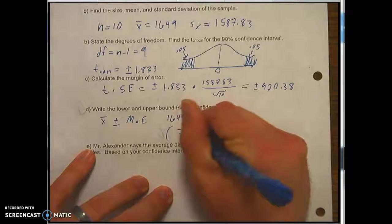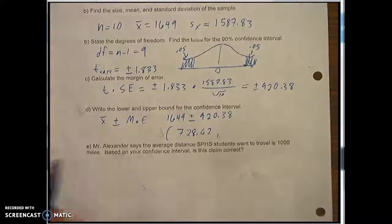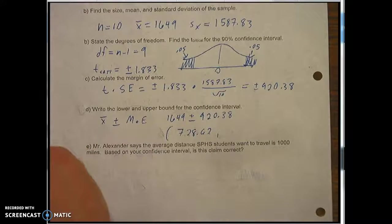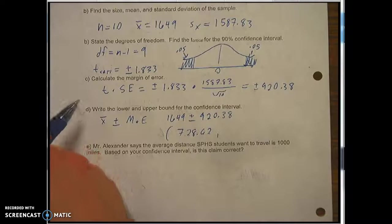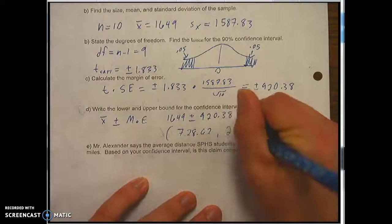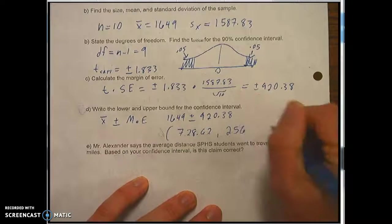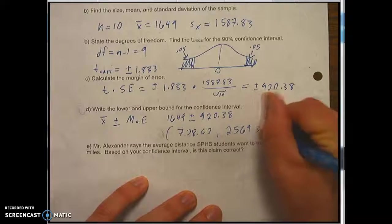Our upper bound, 1649 plus 920.38, 2,569.38 miles.